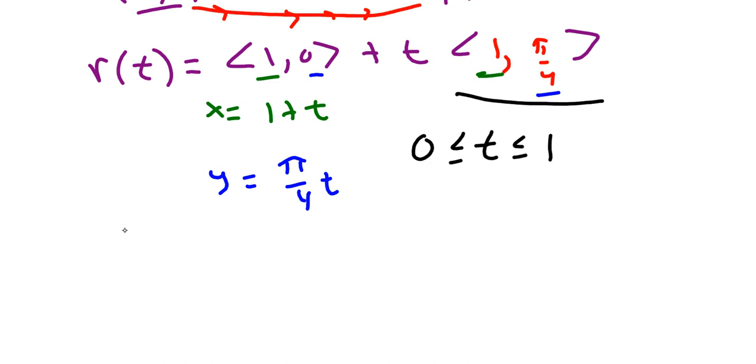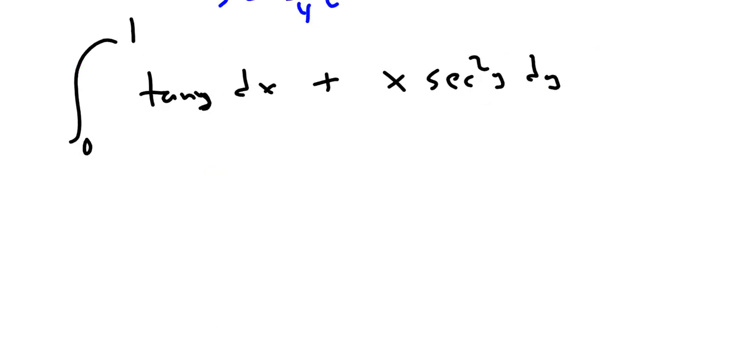So I'm going to write this line to go 0 to 1. And it was originally tangent y dx plus x secant squared y dy.